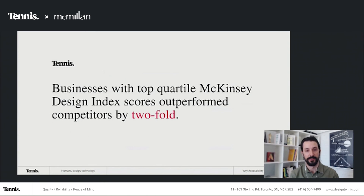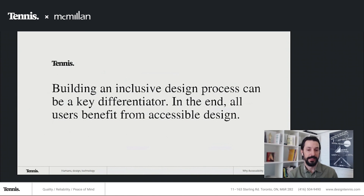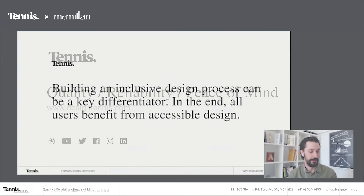McKinsey did a really interesting study called the McKinsey Design Index, which basically ranked large organizations across industries by their design capabilities over a few years. What they found was that businesses that ranked in the top quartile of their MDI score outperformed competitors by double. So as we progress further into this digital world, it's going to become more and more important that accessibility is part of that process. Ultimately, accessible design is an important part of the holistic design process, and building out an inclusive and accessible design process — whether you do it internally or externally — can be a huge differentiating factor within your business.